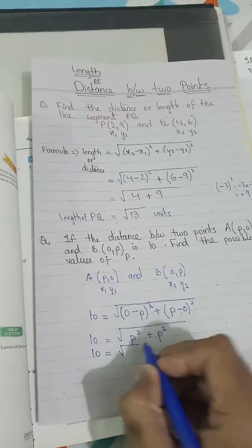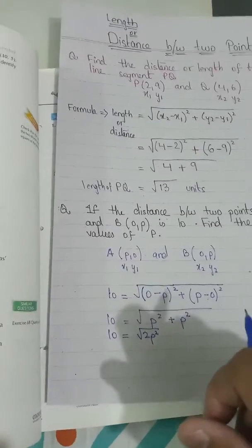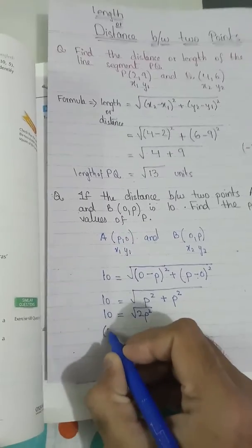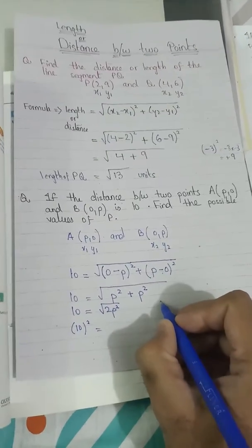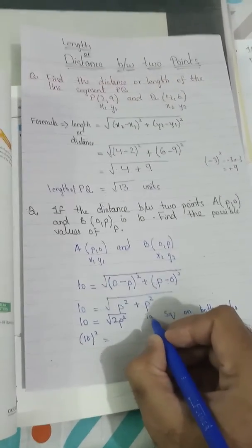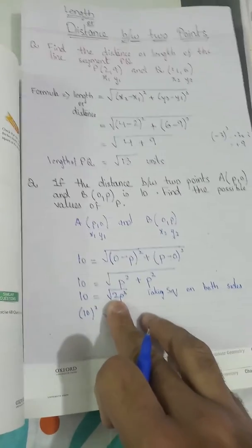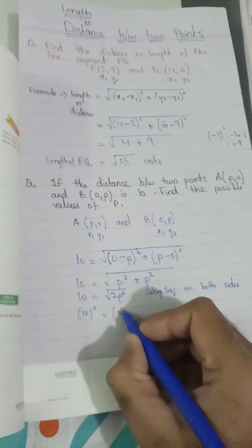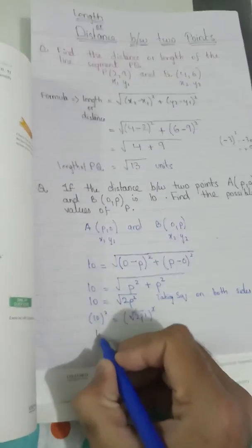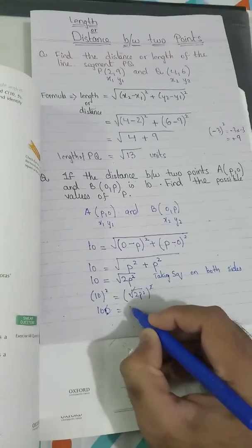So 10 equals square root of p squared plus p squared, which gives square root of 2p squared. I know that the inverse of square root is squaring, so I will take the square on both sides in order to remove the square root sign. 10 squared equals (2p squared) squared — the square cancels the square root — giving 100 equals 2p squared.